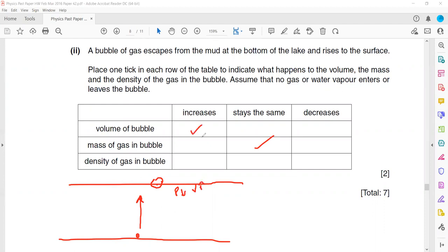But what happens to the volume? Because the bubble is rising, the pressure decreases. If the pressure decreases, the volume of the bubble will increase. And what about density? Density is mass divided by volume. The mass of the bubble does not change, so if the volume is increasing, what happens to density? It will decrease.